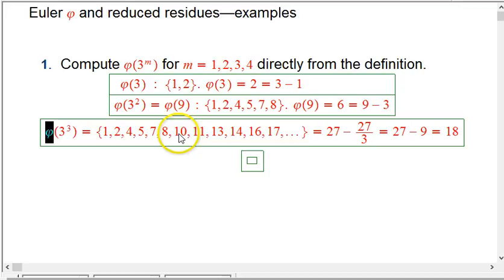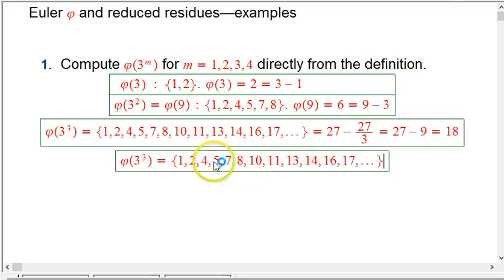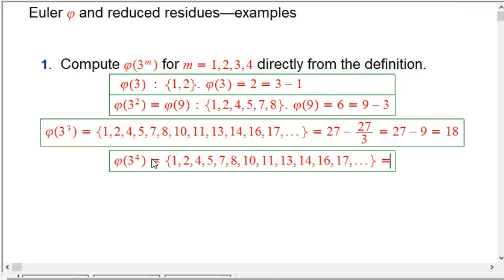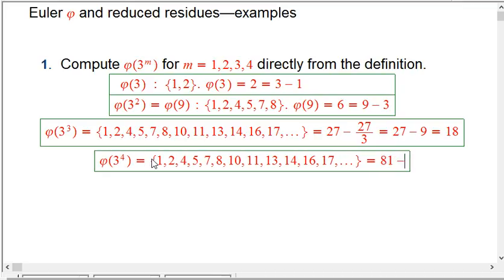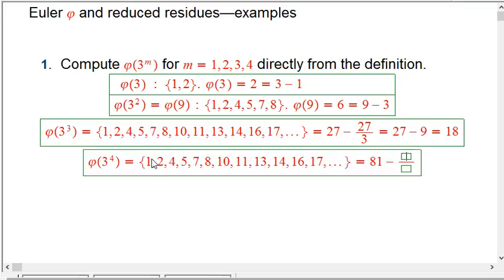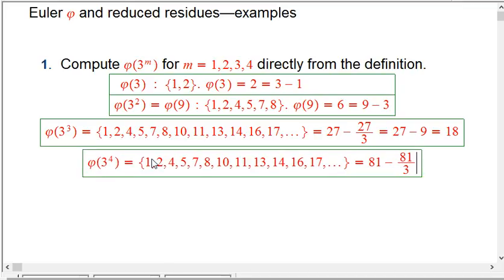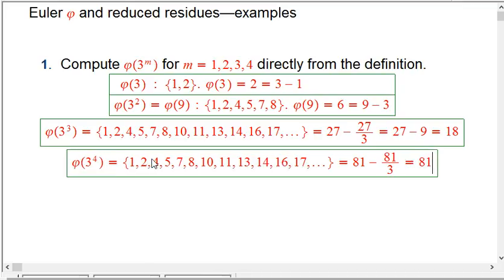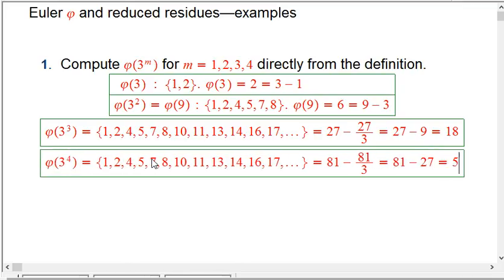One more. Let's do phi of 3 to the 4th. Definitely don't want to list it all out, but it's really the same idea. It really starts with the same list, just all the things that aren't multiples of 3. But now, I go up to 80, which is 1 less than 3 to the 4th. So, it's going to be 0 through 80, which would be 81 numbers. Still the same deal. I'm going to be taking out exactly one-third of those because they're going to be divisible by 3. And so, that's going to be 81 minus 27, which is 54.